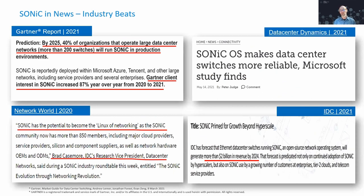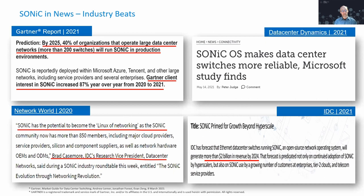SONiC is getting the attention of a large number of people. Gartner predicts that by 2025, 40% of medium and large size organizations are going to be running SONiC in their production data centers. Interest in SONiC is increasing nearly 100% year over year. Leaders at IDC research have suggested that SONiC has the potential to become the Linux of network operating systems — and that is our goal. Studies show the SONiC operating system makes data centers more reliable, and the whole ecosystem appears to be large and growing rapidly.